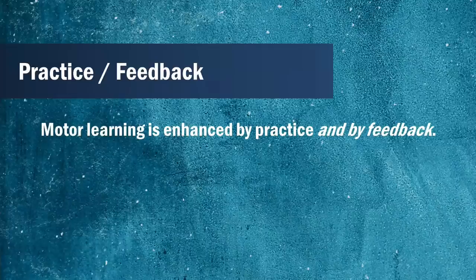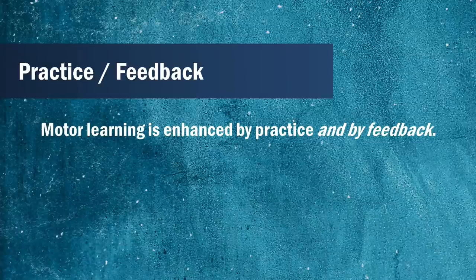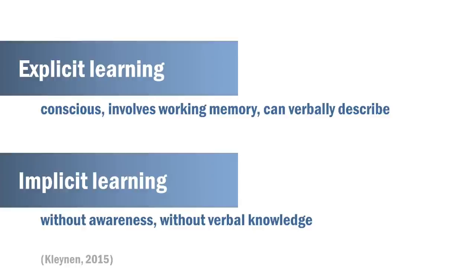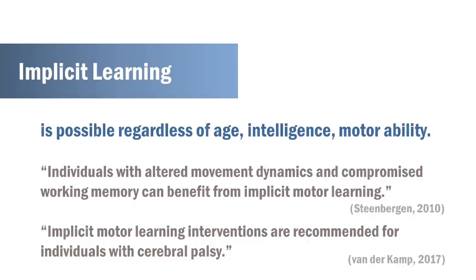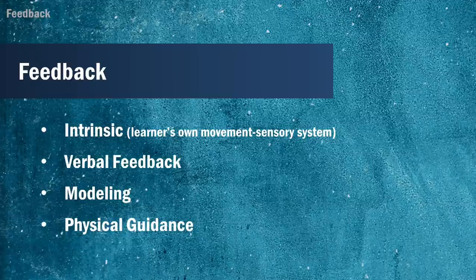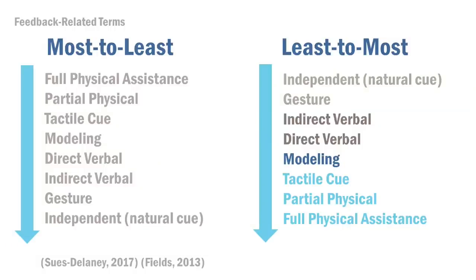This brings us to the feedback segment of the presentation. When we think about feedback: first we attempt the skill, then we receive feedback, then we adapt our approach to attempt the skill again with more success. Explicit learning is conscious — we can verbally describe those critical parameters of a task and consciously find solutions. Implicit learning occurs on a subconscious level and is a response to environmental demands. Implicit learning is possible regardless of age, intelligence, or motor ability, and is seen as appropriate for children with cerebral palsy or altered movement dynamics. Feedback may be intrinsic, verbal, modeling, or physical guidance, which connects back to our most-to-least and least-to-most prompting.